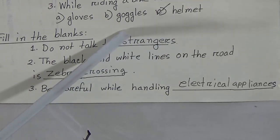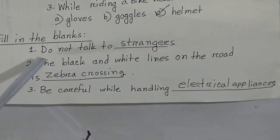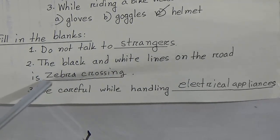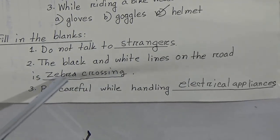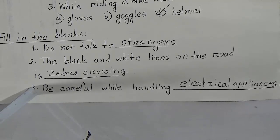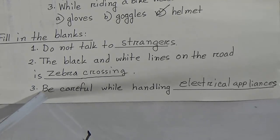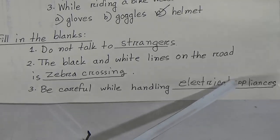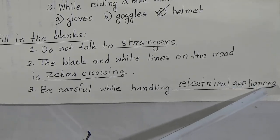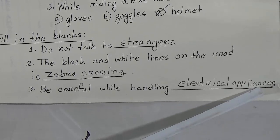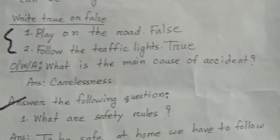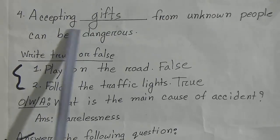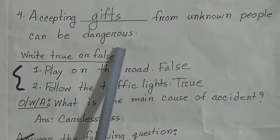Fill in the blanks. Number 1: do not talk to — answer is strangers. Number 2: the black and white lines on the road are called — answer is zebra crossing. Number 3: be careful while handling — answer is electrical appliances. Number 4: accepting gifts from unknown people can be dangerous.